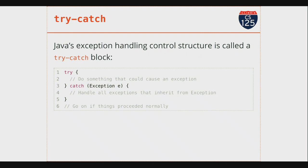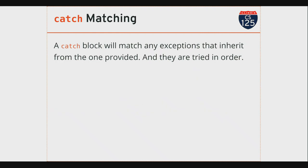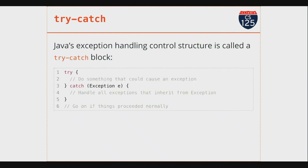If the code inside the try block throws an exception, I can catch it in the catch block. This is like any other control structure — you can put anything you want inside the try block: if statements, loops, calls to other functions. And you can put anything in the catch block. The semantics are associated with what happens when there's an error.